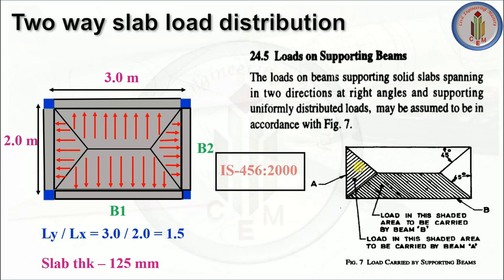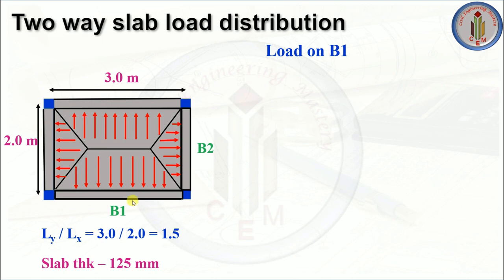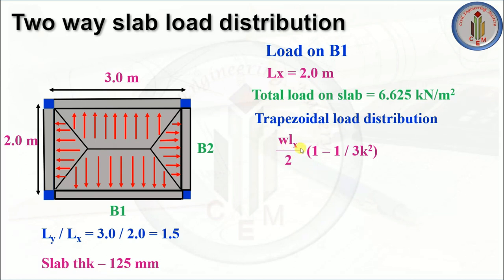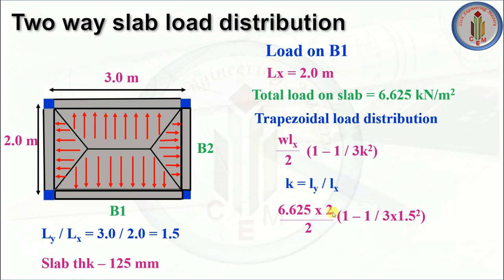Let's calculate the load on B1 (trapezoidal load). Lx = 2 m (shorter span), total load on slab = 6.625 kN/m². The formula for trapezoidal load distribution is: w × Lx/2 × (1 − 1/(3k²)), where k = Ly/Lx = 1.5. Substituting all values: 6.625 × 2/2 × (1 − 1/(3 × 1.5²)) = 5.64 kN/m. The same trapezoidal load of 5.64 kN/m also goes to the opposite beam B1.